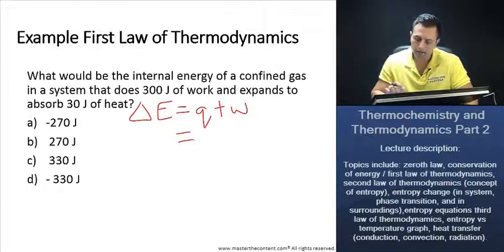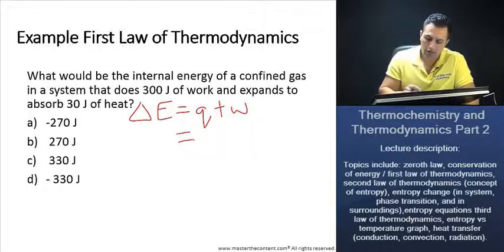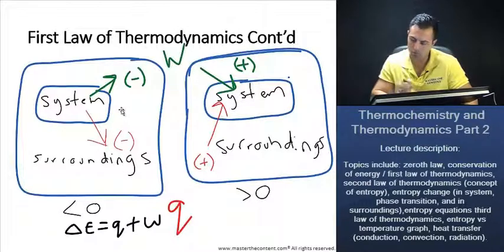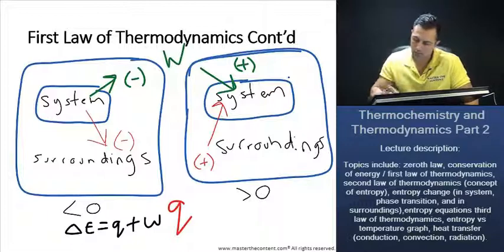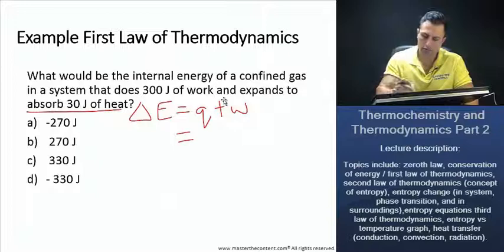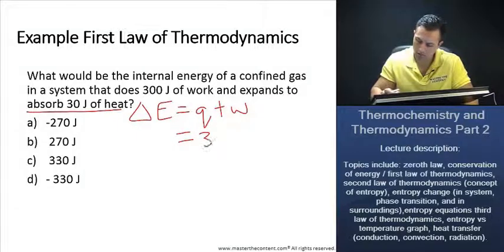Let's take a look here. It's saying that our system is absorbing 30 joules of heat. And if we take a look back at our one slide back, we just said if the system absorbs heat, it's going to be positive. So we can go ahead and write in positive 30 joules.